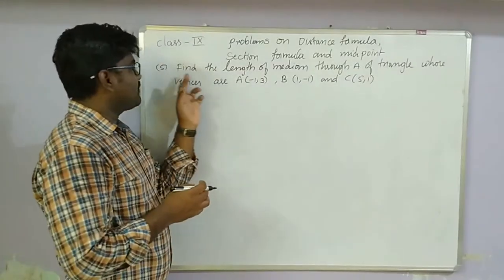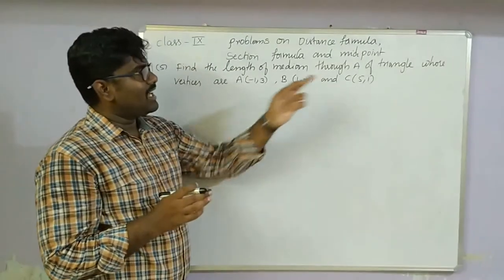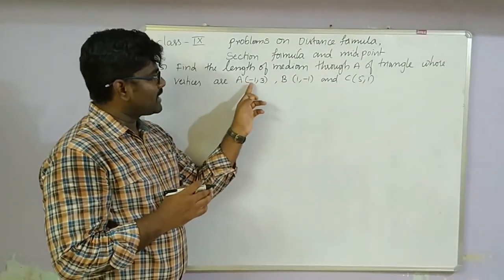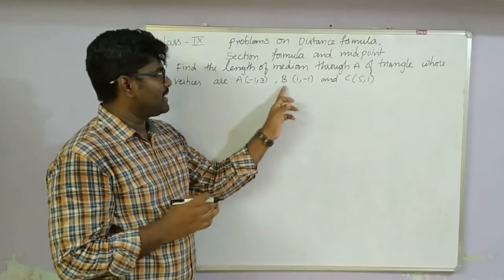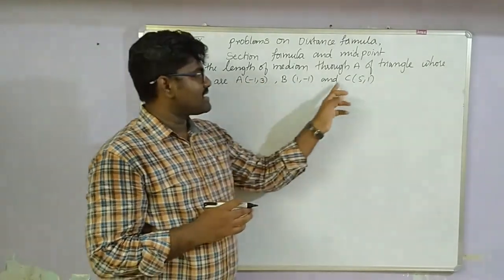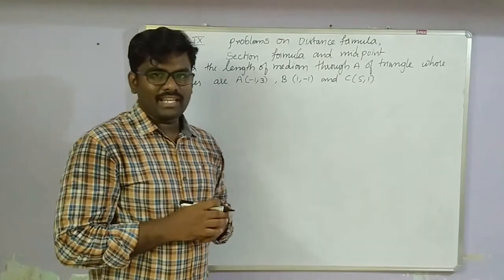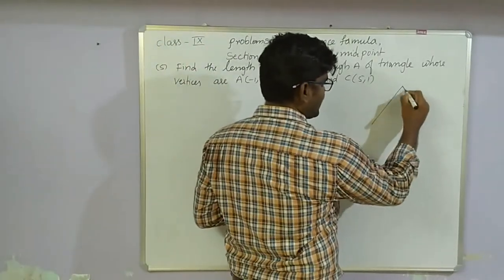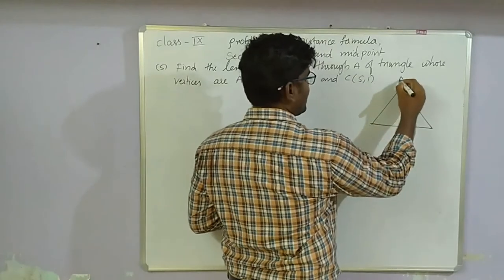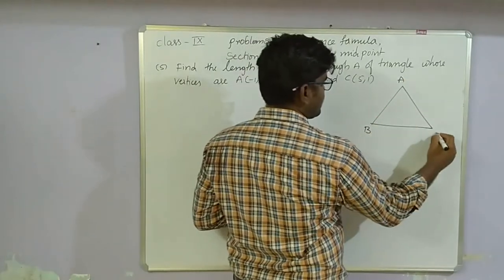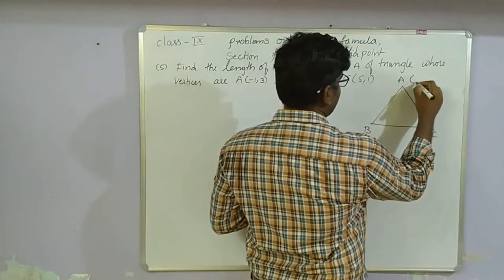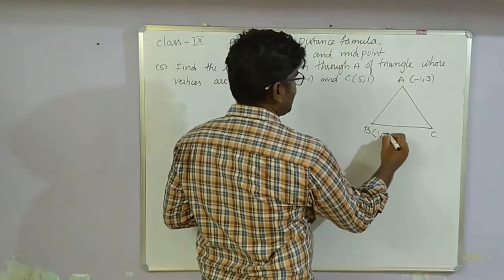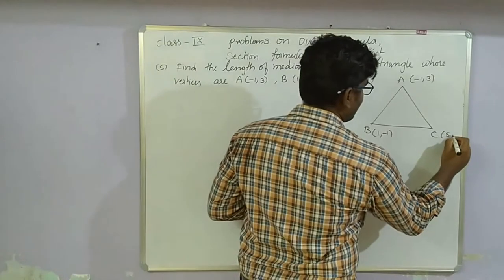Next example: find the length of median through A of a triangle whose vertices are A(-1, 3), B(1, -1), and C(5, 1).